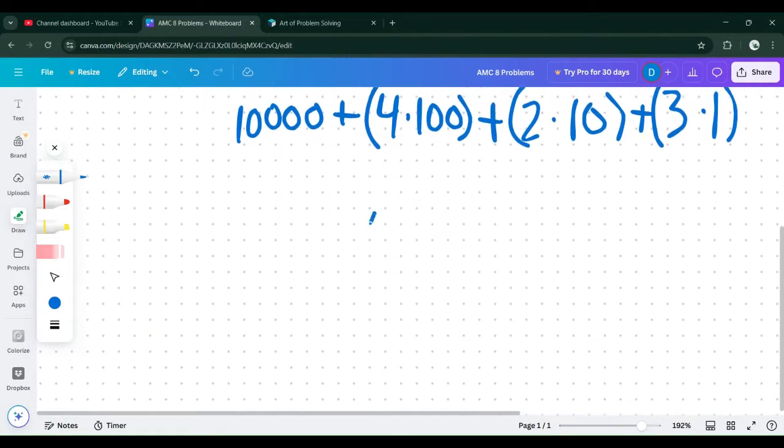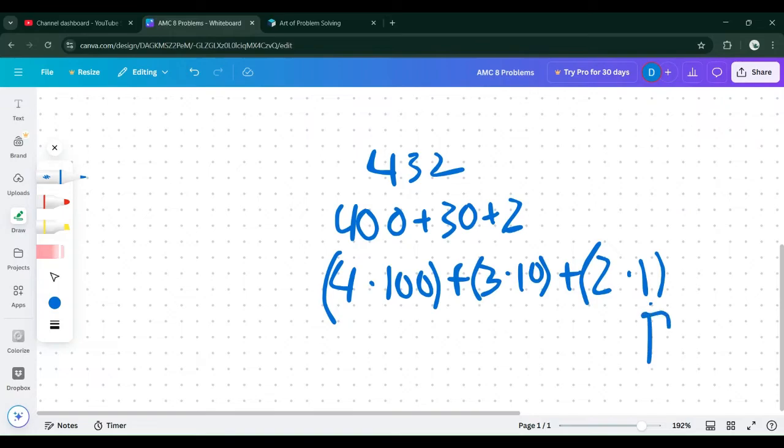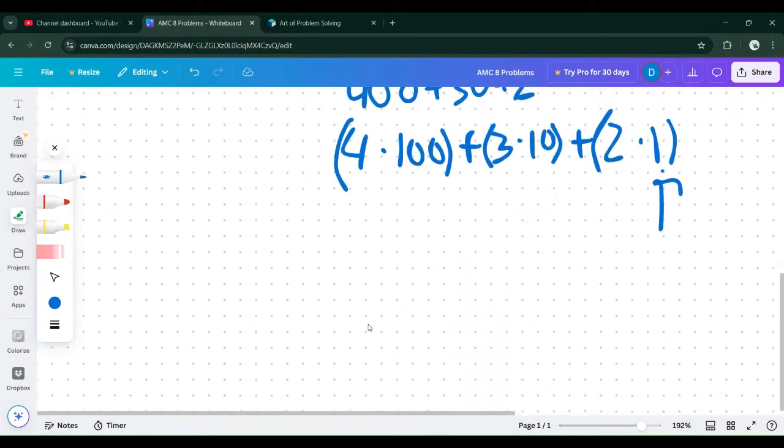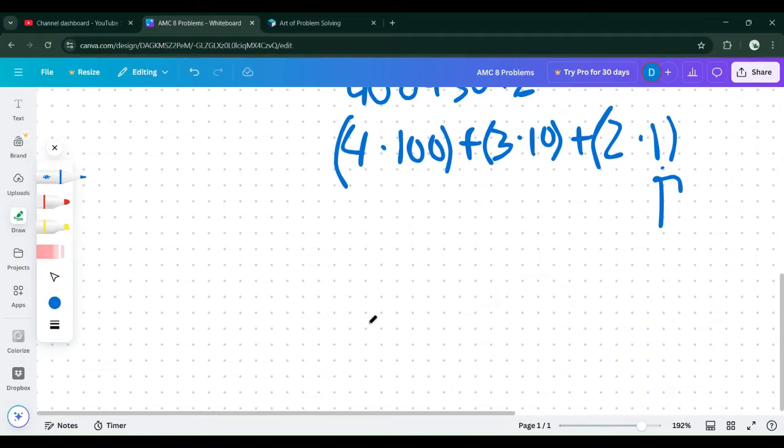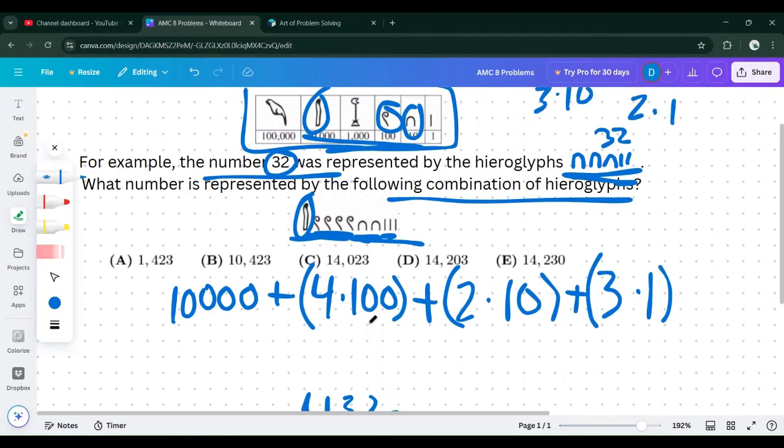Let's bring up an example, 432. We can rewrite this as 400 plus 30 plus 2. We can write 400 as 4 times 100, rewrite 30 as 3 times 10, and 2 as 2 times 1. They're basically like these hieroglyphics. They're worth one amount and they add up to the total sum.